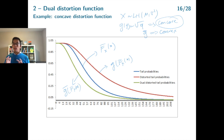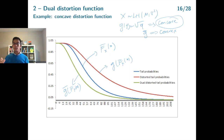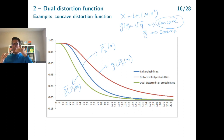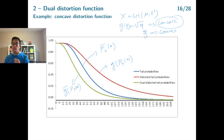If the random variable x denotes future losses, we use the red curve — the concave distorted tail function — to determine the distorted expectation in the stress scenario, where stress means increasing the tail probability. If x denotes income, so that large values of x mean receiving a lot of money, we stress x using the dual distortion function by decreasing the tail probabilities and using the green curve.